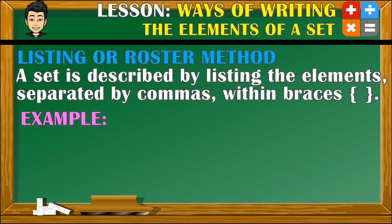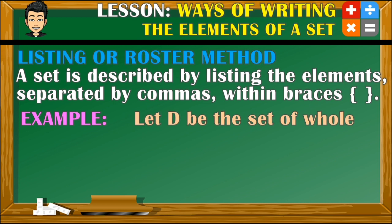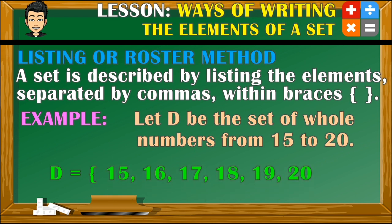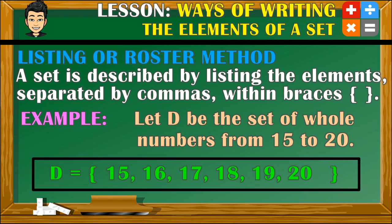For the next example, let D be the set of whole numbers from 15 to 20. Based on this, we can say that set D will have the following elements. We just list down the elements one by one.